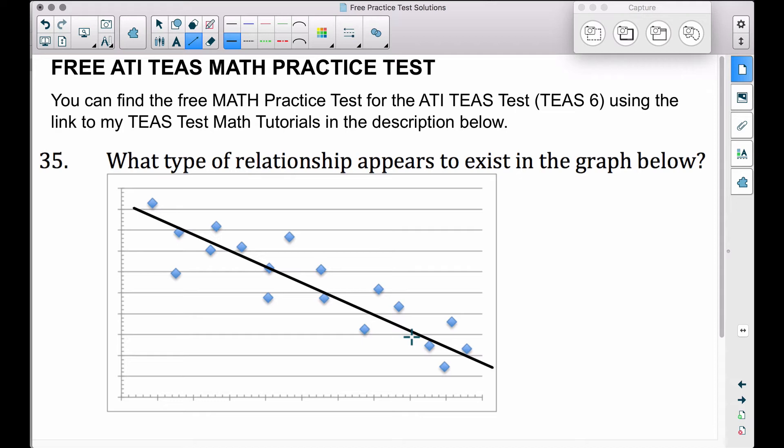And it looks like the line is going down from left to right. Therefore, we can say that this relationship here is a negative linear relationship.